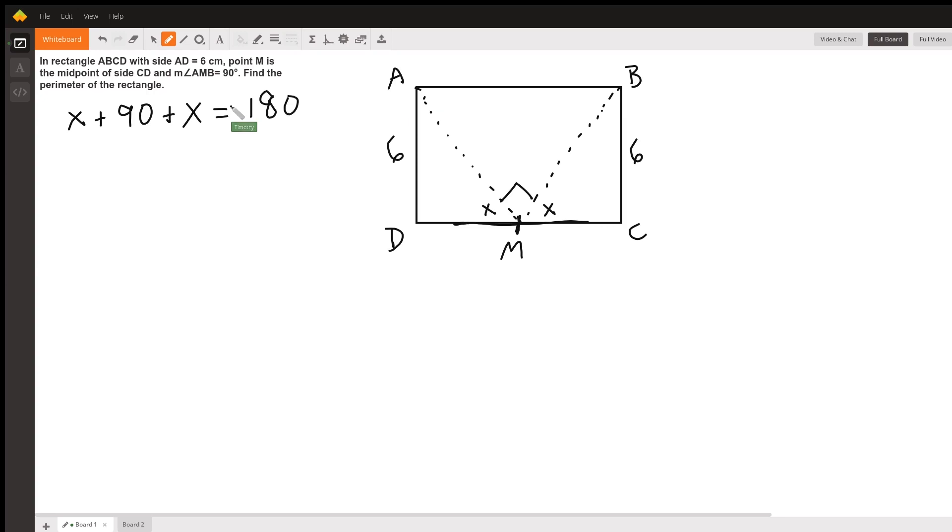Okay, so I'll just do this math kind of quick. Subtract 90. The two X's will be 2X. And then 180 minus 90 is 90. Dividing by 2 gives X to equal 45.